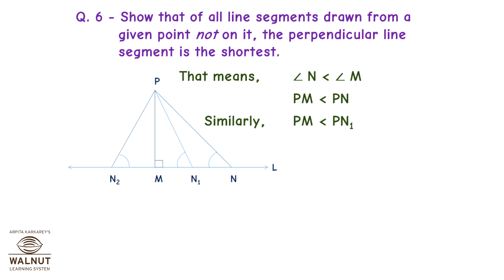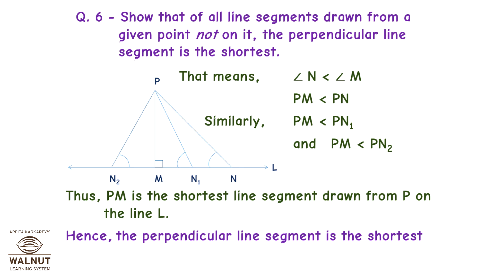Similarly, PM is less than PN1. And, PM is less than PN2. Thus, PM is the shortest line segment drawn from P on the line L. Hence, the perpendicular line segment is the shortest line segment drawn from a point not on it. Done!